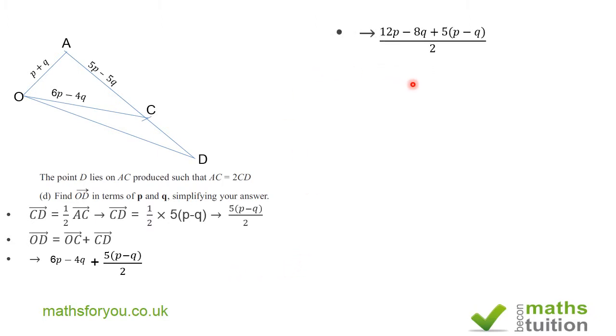If we then try and simplify that, it becomes 12P minus 8Q plus 5(P minus Q), because if we use 2 as the lowest common multiple, that's what we got there. If we then open up our brackets, we have 12P minus 8Q plus 5P minus 5Q, all divided by 2.